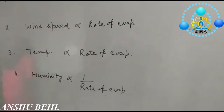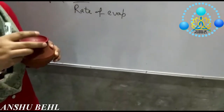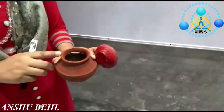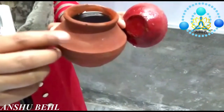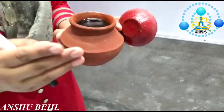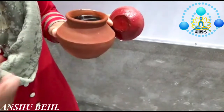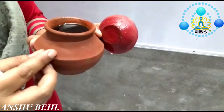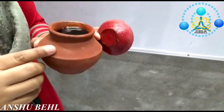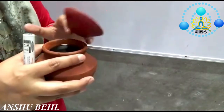Water kept in an earthen pot remains cold. Why? Water molecules seep out through the pores of the earthen pot and reach the outer surface, where they come in contact with outside air. The air takes some of the water molecules from the surface. The molecules leaving need energy, which they take from the surface, making the surface cold — and so the water inside the earthen pot remains cold.